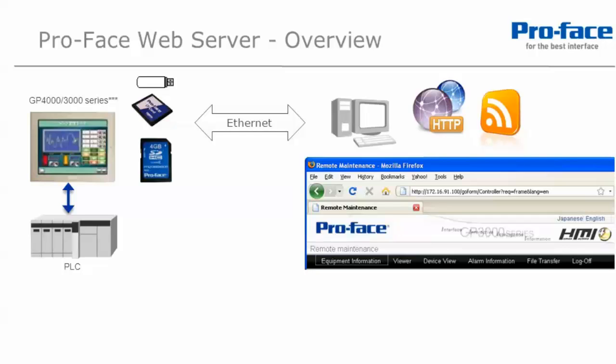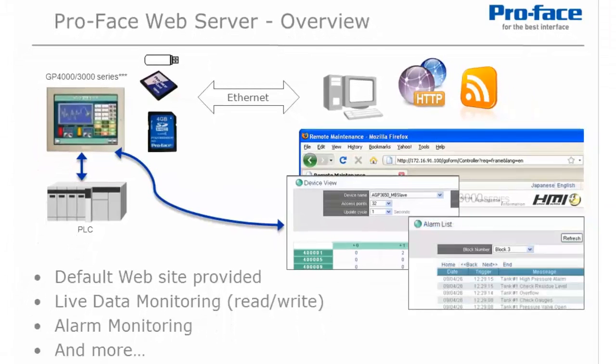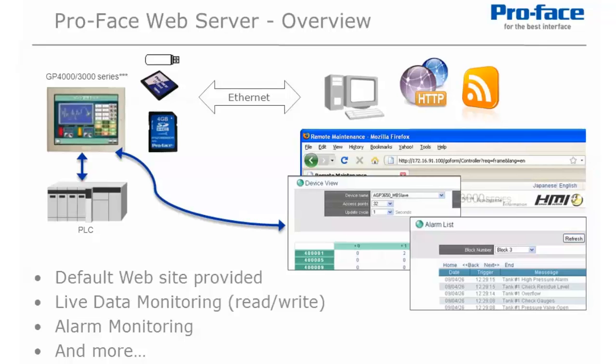Note: if you have access to a DNS server, you can assign a domain name to the IP address of the HMI, which simplifies remembering the website address. Using the default website provided by ProPhase and GP Pro EX, we can now display live data, active historical or log alarms, as well as many other features. So you can see that many web-enabled devices and software in the market will be able to take advantage of the ProPhase web server features.